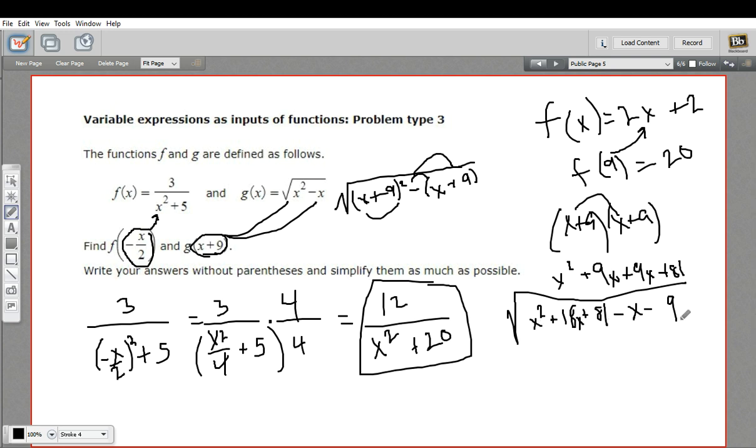So let me make a new radical sign here. x squared plus 17x, and 81 minus 9 is going to be 72. So I've got the square root of x squared plus 17x plus 72.